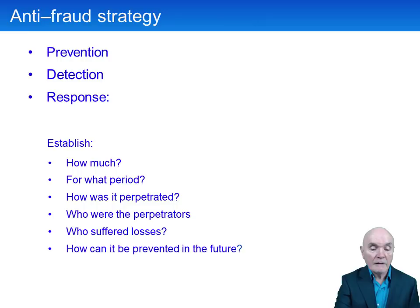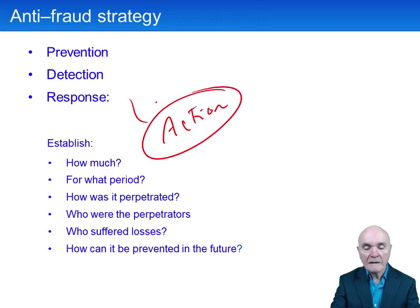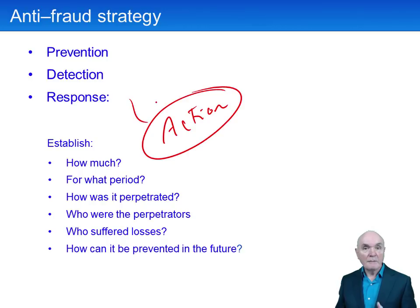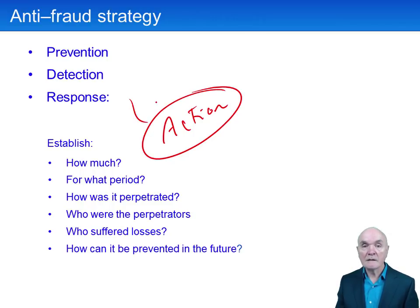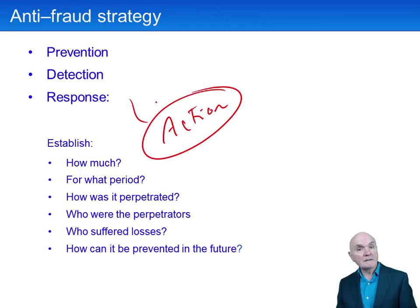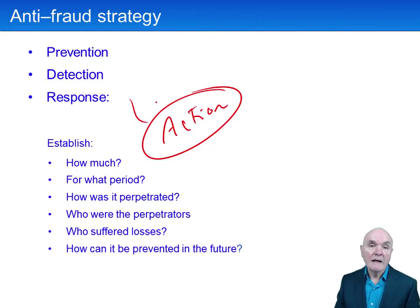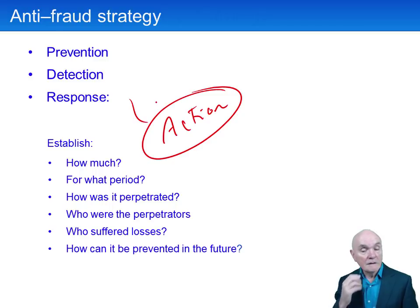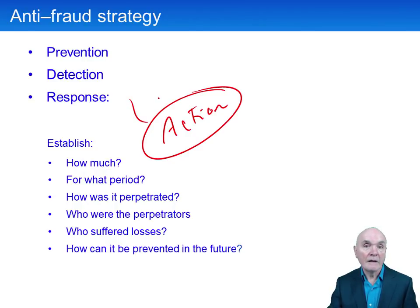How can it be prevented in future? And one of the things we need to think about in the response is the action to take. What are we going to do about the fraudsters when we have discovered them? Are we just going to give them a stern warning? Are we going to sack them? Are we perhaps going to sack them with a good reference just to get rid of them quietly? Many companies prefer to sack fraudulent employees because it's rather embarrassing to admit that you have suffered a fraud. Are you going to call the police? Are you going to prosecute? Because that becomes a very public theatre, and sometimes it can be quite difficult to get enough evidence to pass the criminal bar — to find somebody guilty beyond reasonable doubt.